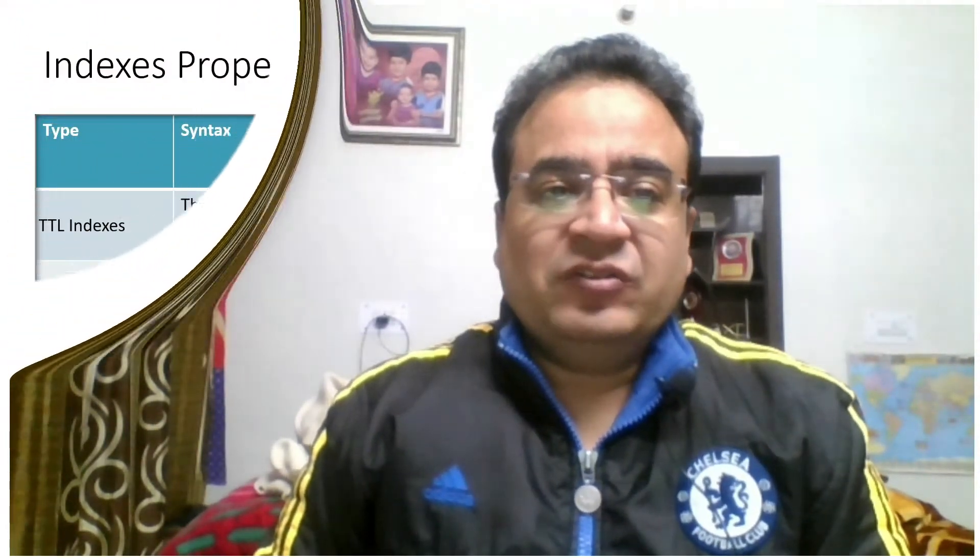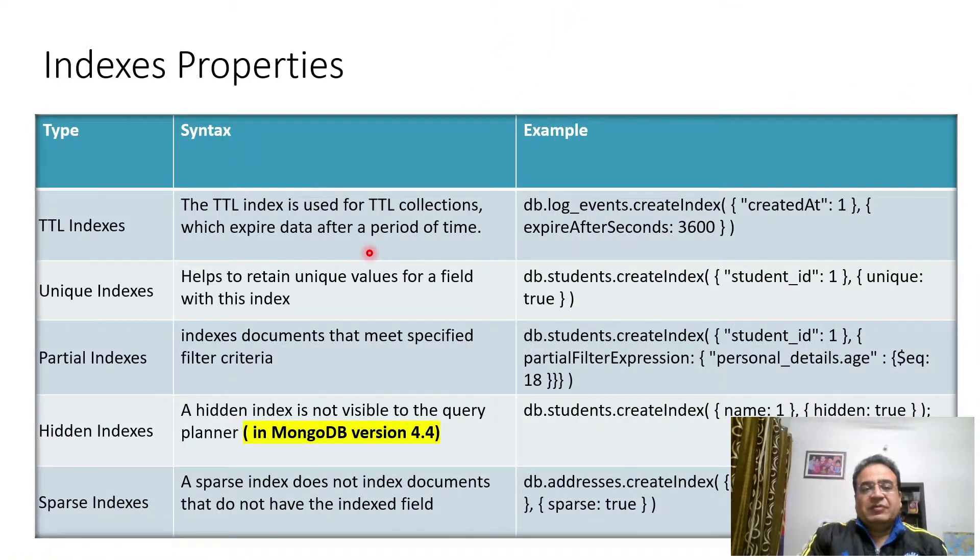In this video I am going to touch upon indexes properties, primarily how many types of indexes. We might have unique indexes, we might have some other kind of indexes that we are going to see in this video. Properties basically means in how many ways we can create different kinds of indexes.